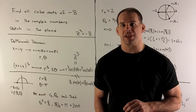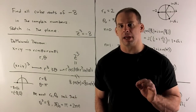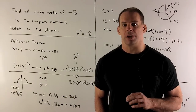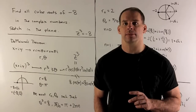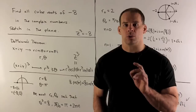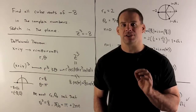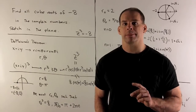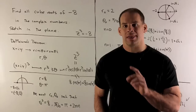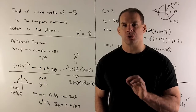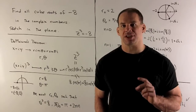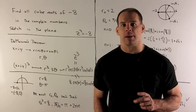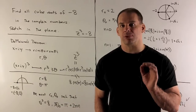Find all cube roots of minus 8 in the complex numbers, then sketch these points in the complex plane. We're trying to solve z cubed equals minus 8 — that's what we mean by a cube root. That's the same as finding all solutions to z cubed plus 8 equals 0. Since we're over the complex numbers, we're going to have three solutions.